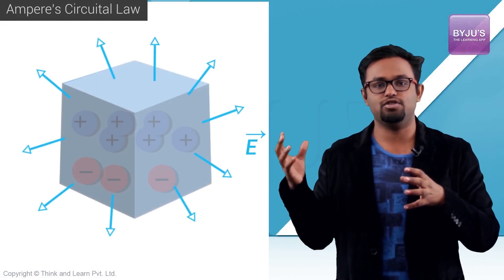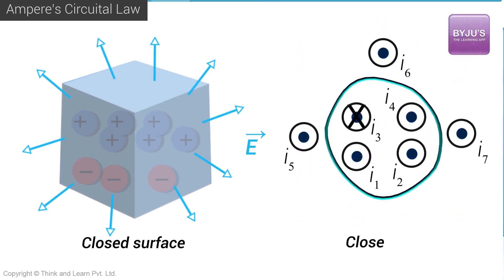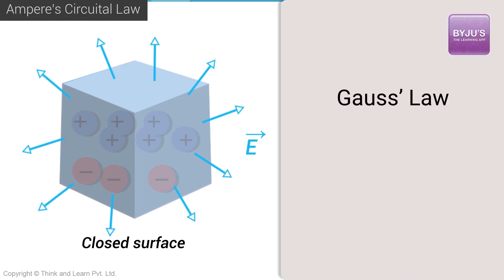So we have established that just as we had electric flux over a surface, we similarly have the circulation of magnetic field over a loop. Now, what did we do with flux? We arrived at a law — Gauss's law — which states that the flux of electric field over a closed surface equals the charge enclosed divided by epsilon. This was very useful for finding the electric field for symmetrical charge distributions, and it is as fundamental as Coulomb's law itself.